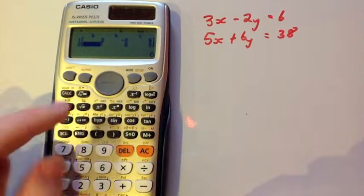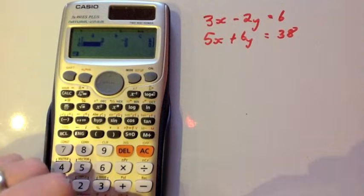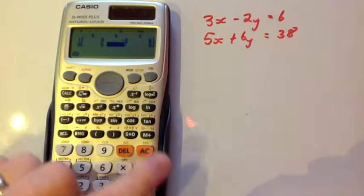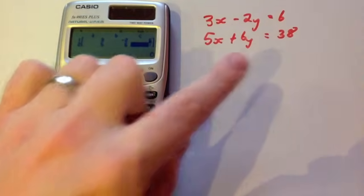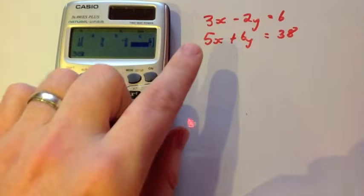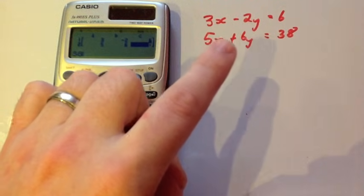Next we're going to put the 5 and then the 6. The 5 is the number in front of the X, the 6 is the number in front of the Y, and it's equal to 38. We're going to press equals 38. Now if it wasn't in the format 3X minus 2Y equals 6...